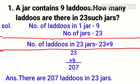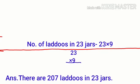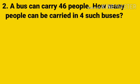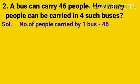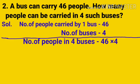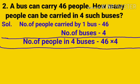Now moving to your second word problem: a bus can carry 46 people. How many people can be carried in 4 such buses? So what is given? One bus carries 46 people. Your first statement: number of people carried by one bus = 46. Second statement: number of buses = 4. So what you have to find: number of people in 4 buses = 46 × 4.